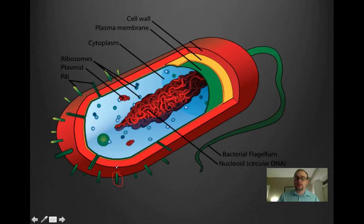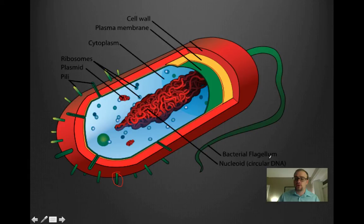Some bacteria can reproduce sexually. For movement, bacteria use this structure called a flagellum — a single flagellum, with U-M on the end, or multiple flagella with an A, which is the Latin plural. Basically it's a tail-like structure which can be waved around and actually allows the bacteria to move around in its environment.